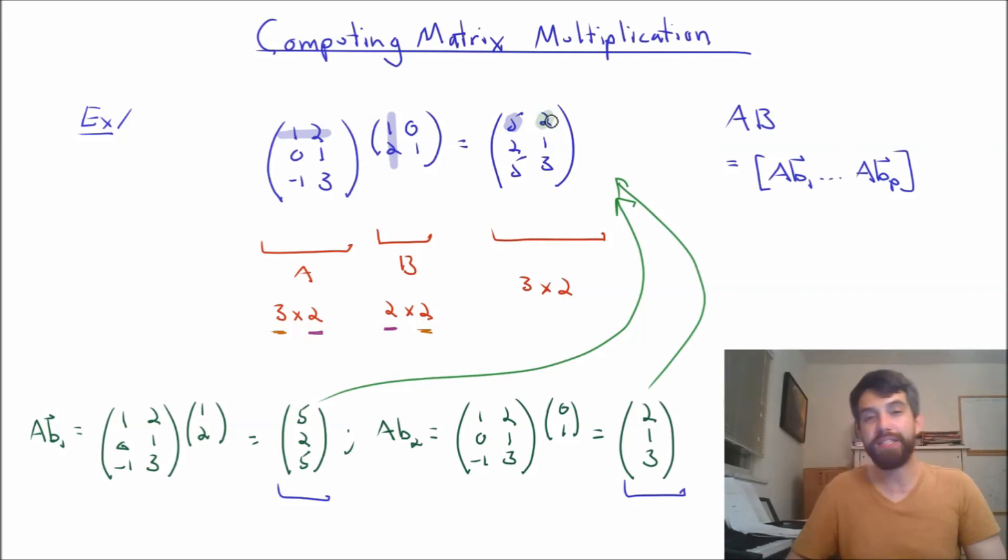Or, for instance, if I go to the 2 here, that's in the first row, second column. So, I'm going to sort of highlight over top of my first row again. But now I'm looking at the second column over here. First row of the first matrix, second column of the second matrix. So, I get 0 times 1 plus 2 times 1 is indeed 2.